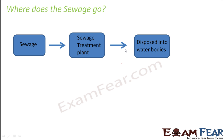Direct disposal of sewage into water bodies is a strict no-no, because it pollutes the entire water of that river, ocean, or pond. Instead, we collect all the sewage from a community, put it into the sewage treatment plant, and inside this plant all the pollutants and undesirable substances are removed.